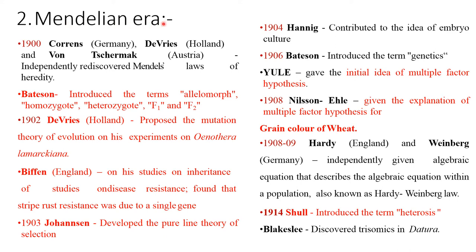The second era is the Mendelian era. Bateson introduced the terms allelomorph, homozygote, heterozygote, F1, and F2 in 1902. De Vries from Poland proposed the mutation theory of evolution based on his experiments on Oenothera lamarckiana.